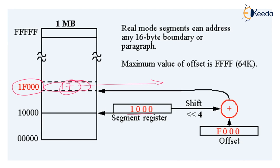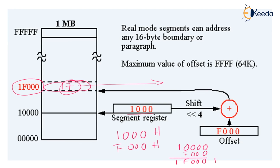If the segment register is 1000H and offset address is F200H, we calculate the physical address: 10000H plus F200H equals 1F200H. This is the segment address and this is the offset address, giving us the 20-bit physical address 1F200H. This is very, very important.